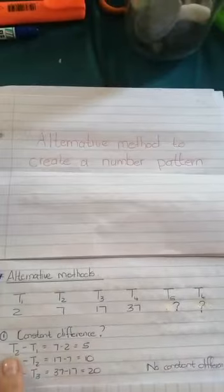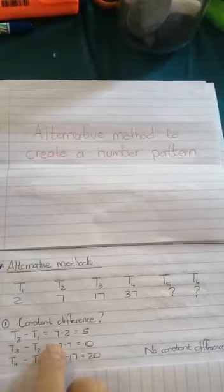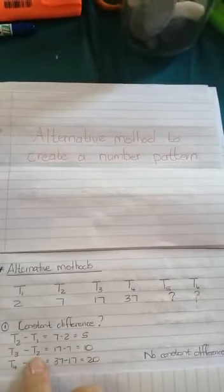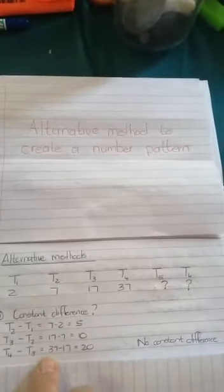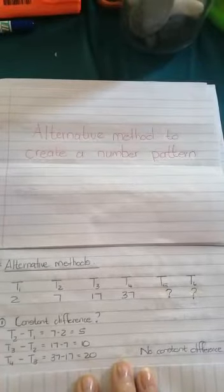If I used the formula I used yesterday, T2 minus T1, that's where I got the 5. And then T3 minus T2, 17 minus 7 is 10. T4 minus T3 is 37 minus 17 is 20. So there's no constant difference.